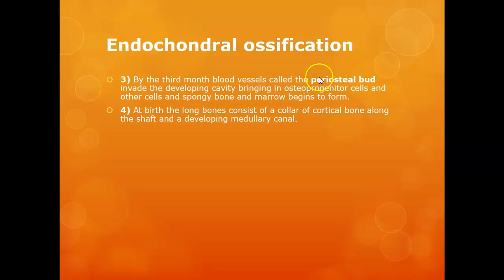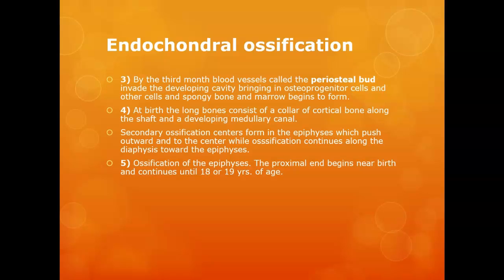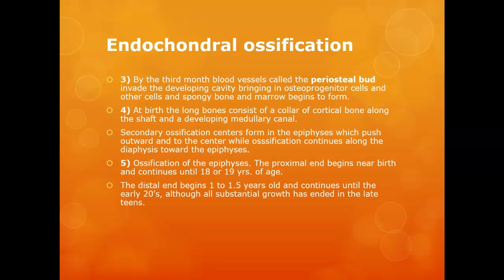By the third month of development, the blood supply enters and the ossification bud forms. At birth you have a cortex of bone along the shaft, and the secondary ossification centers are forming at the epiphyses. The proximal end starts forming at or near birth and continues until about age 18 or 19 when the growth plate closes. The distal end starts ossifying around 12 to 18 months and continues into the early 20s. Your proximal closes before your distal — remember, bone grows at its ends.